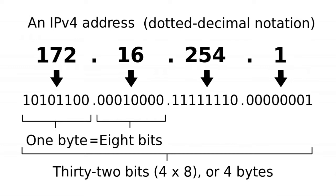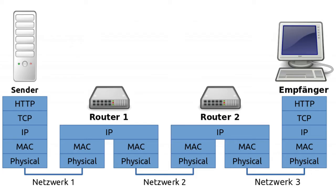It is a number system separated by dots. Since there are millions of devices working simultaneously over the internet, there should be a system to identify each device separately to ensure systematic flow of data. Just like a house or a building of an organization has its own unique address in a city, each device on the internet has its own unique IP.